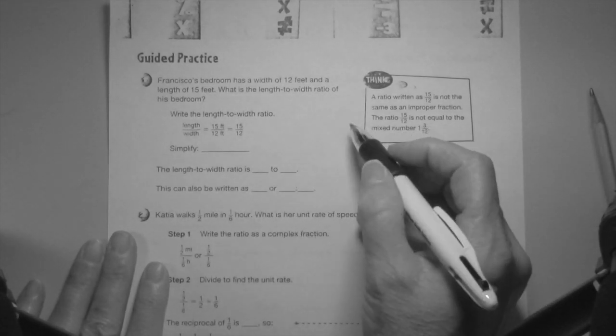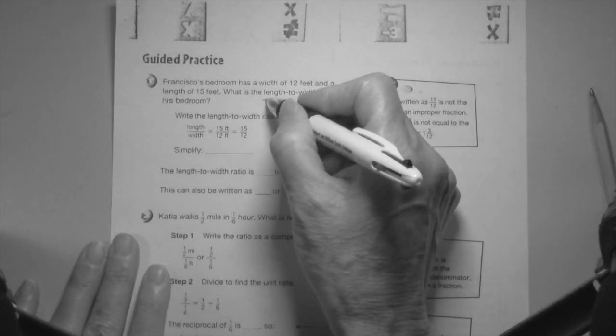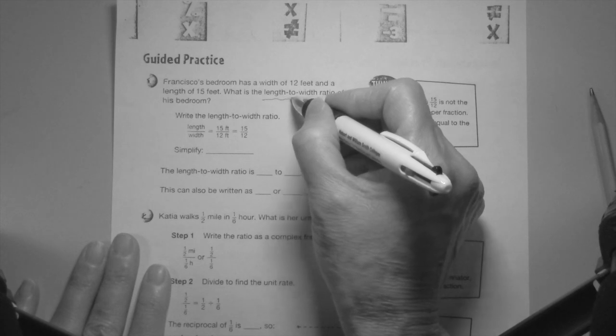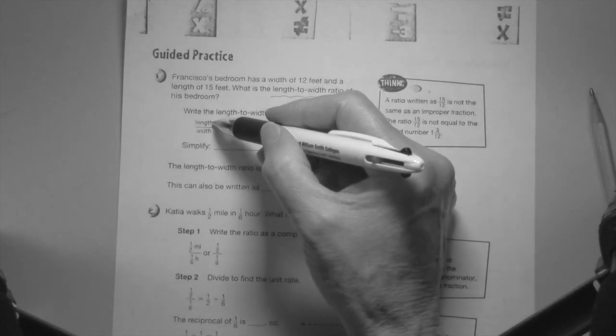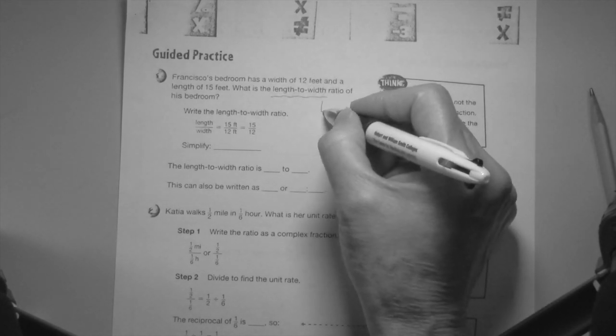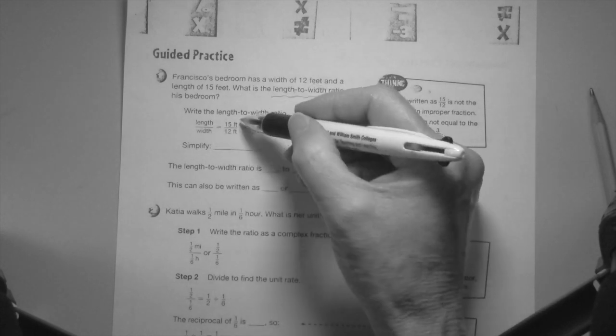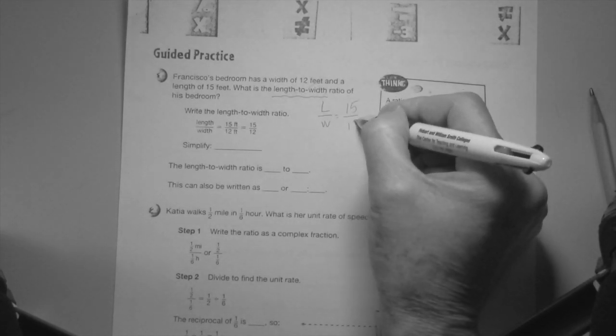Guided practice. Francisco's bedroom has a width of 12 feet and the length of 15 feet. What is the length to width? This is where I want you to really be careful, underline what are they asking you. Length to width, so that's easy. Length to width ratio of the bedroom. Make a fraction. Always, this is the first one, this is the second. So length over width, length to width is 15 to 12.